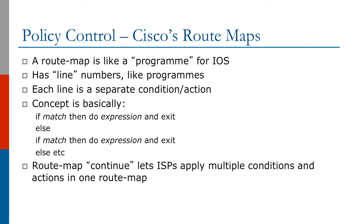The concept is basically: if you match something, then do a particular expression and exit. Else, if you match something else, then do this other expression and exit, and it continues on and on. The route map continue keyword allows you to apply more than one condition and action inside one route map — it lets you jump to the next line number and continue executing what is contained in both expressions.